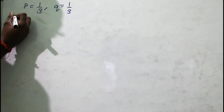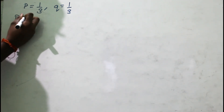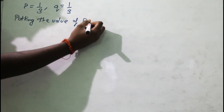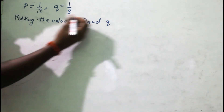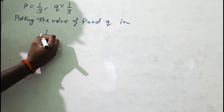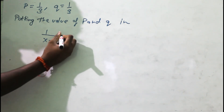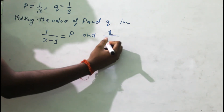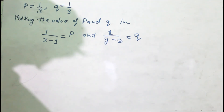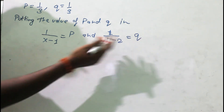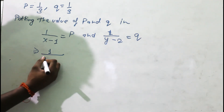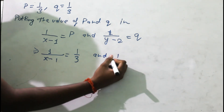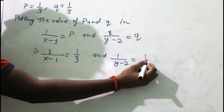Putting the values of p and q back: since 1/(x-1) = p = 1/3, by cross multiplication x - 1 = 3. And since 1/(y-2) = q = 1/3, by cross multiplication y - 2 = 3.